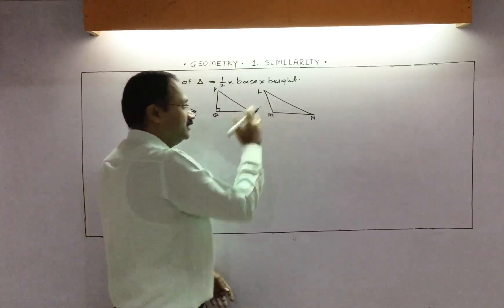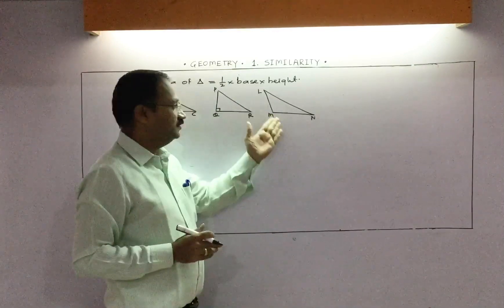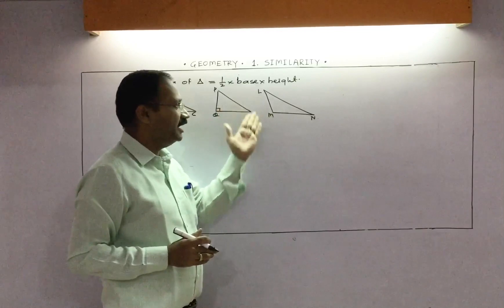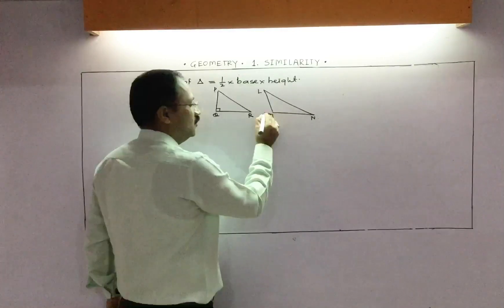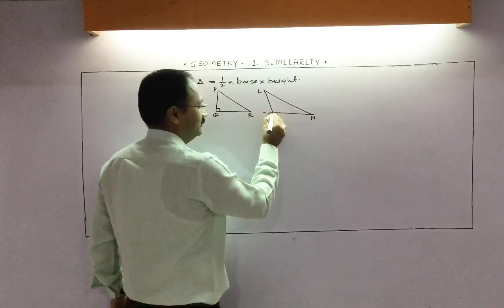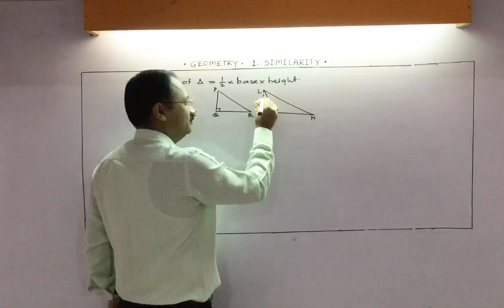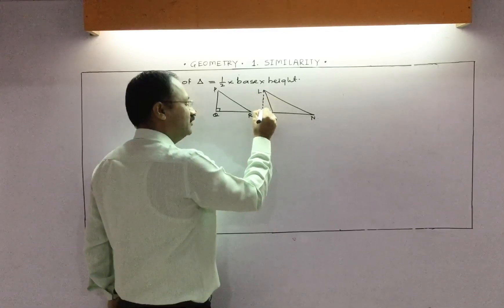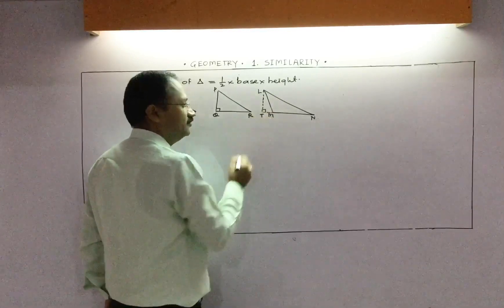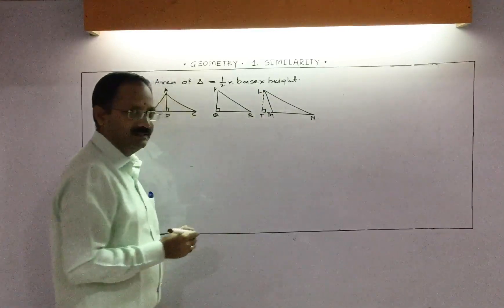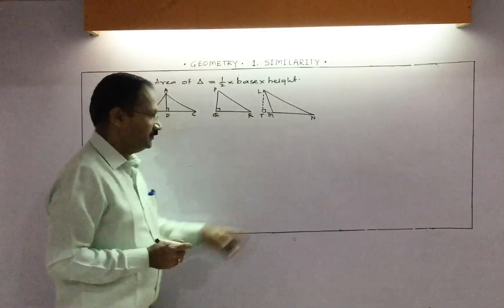What about the third triangle? Can you tell me the height of this triangle? There is no height inside, because it is an obtuse angle triangle — its height is always outside the triangle. NT is the height of this triangle.